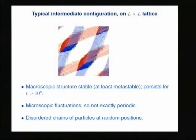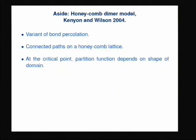I was trying to figure out what was going on because it really doesn't seem to fit the standard model. This is what an intermediate configuration looks like on a square lattice — there are little chains floating around inside the mix. It's not a perfectly ordered system; there are all these microscopic fluctuations and random chains that move throughout the system. What grabbed my attention was the honeycomb dimer model, done by Kenyon and Wilson. I happened to be working with David Wilson at the same place at that time.